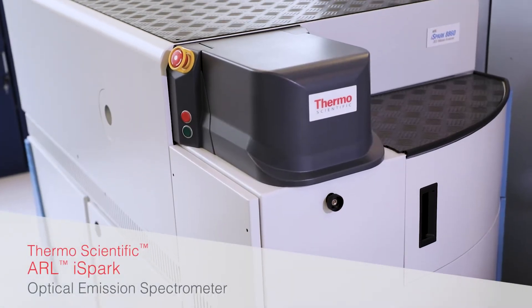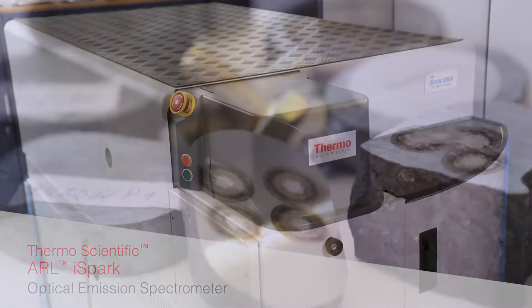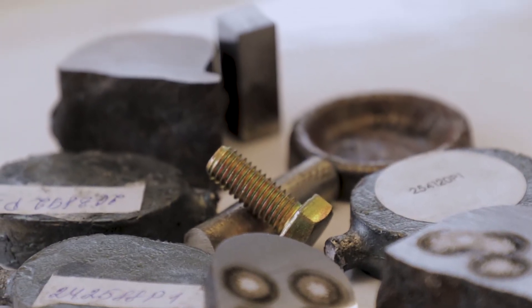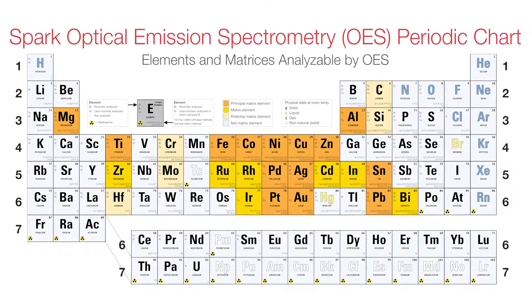Spark Optical Emission Spectrometry, or OES, is the most widely used technique for fast elemental analysis of solid samples of a large variety of metals and alloys.